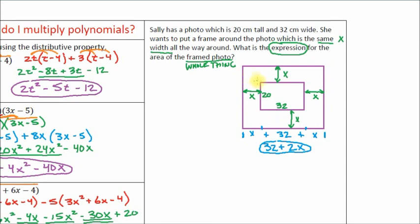We can do the height of our frame the exact same way. If you want to know how far it is from top to bottom, we know the part right in the middle is the same as the height of our picture, which is 20. And we know this length right here is x — that's the width of our frame — and this is also x. So the height of the whole thing is x plus 20 plus x, which is 20 plus 2x. We know how to do that because we already know how to add monomials.